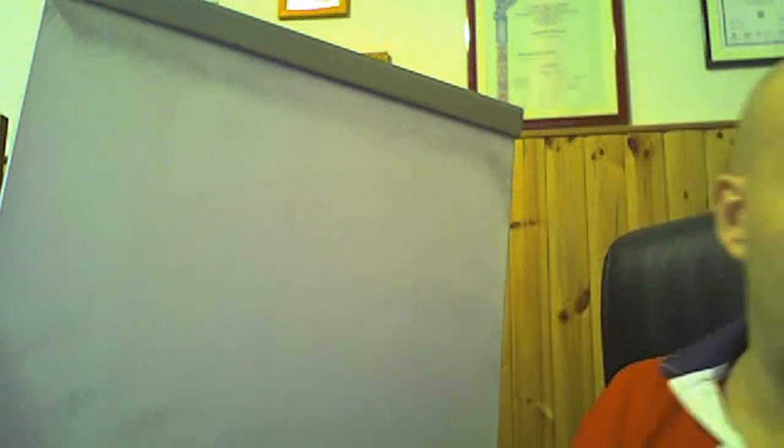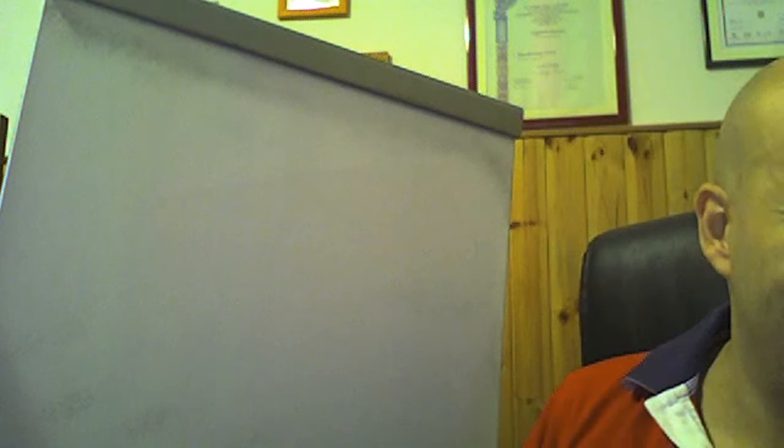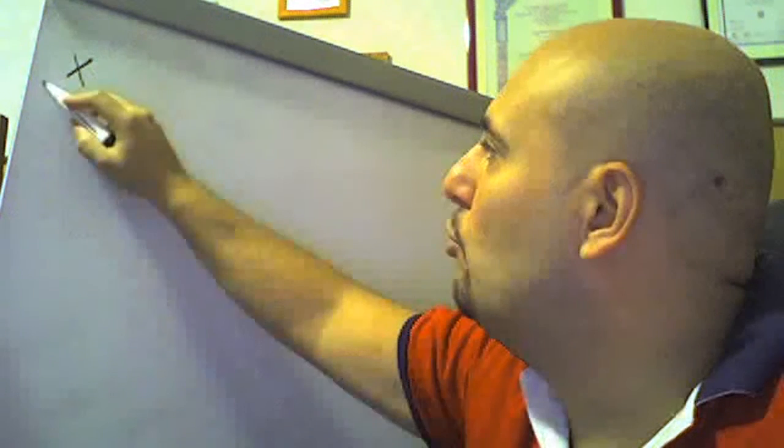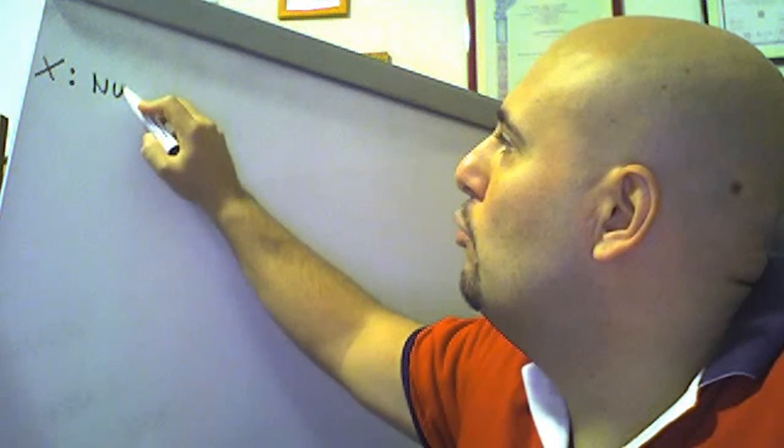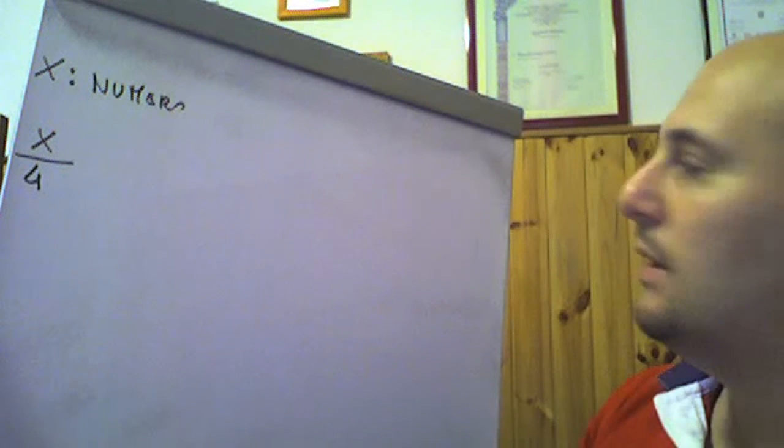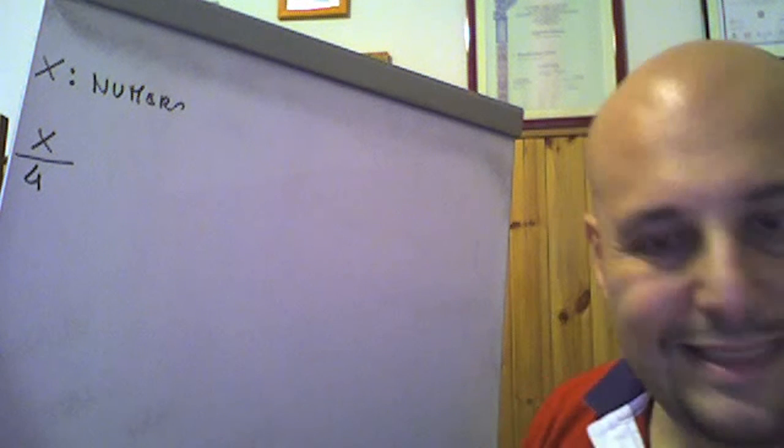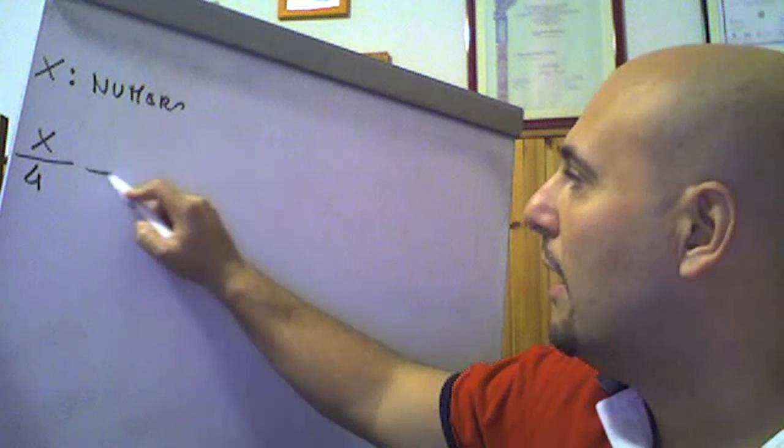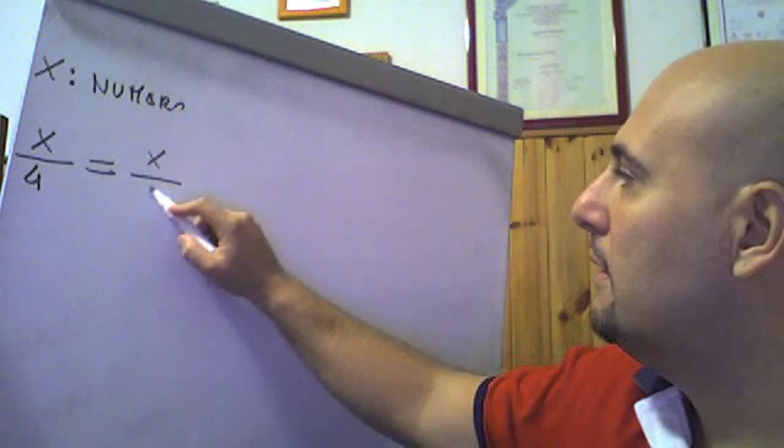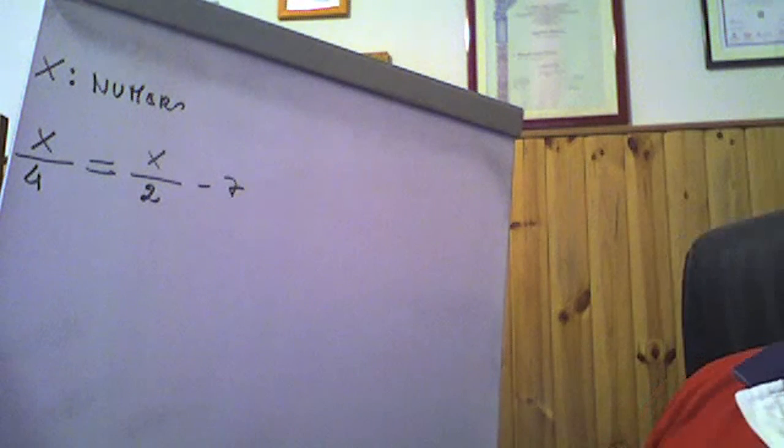Terzo e ultimo esercizio: dividendo un numero per 4 o sottraendo 7 alla metà del numero, si ottiene lo stesso risultato. x è il nostro numero. Dividere un numero per 4: x è il dividendo, 4 è il divisore, quindi x/4. Sottraendo 7 alla metà del numero vuol dire x/2 - 7. Quindi x/4 = x/2 - 7, questa è l'equazione da impostare.